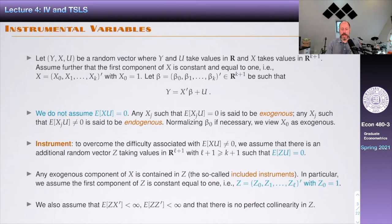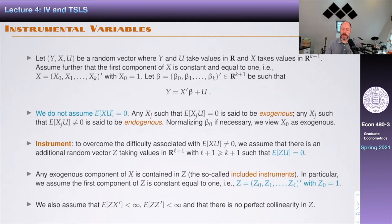We're going to use similar notation as before. We're going to let y, x, and u be a random vector, where y and u are going to be scalars, and x is going to take values in ℝ^(k+1). x₀ is going to be a constant term, and the other ones are going to be random variables. Beta is going to contain an intercept β₀ and then slope parameters β₁ through βₖ. The model is going to be y = xβ + u. But, as opposed to what we have been doing so far, we're now going to assume that the expected value of x·u is not zero. Any xⱼ such that E[xⱼu] = 0 is said to be exogenous, and any xⱼ such that E[xⱼu] ≠ 0 is said to be endogenous. We're always going to normalize β₀, which means we assume E[u] = 0, so that the constant term is forced exogenous.